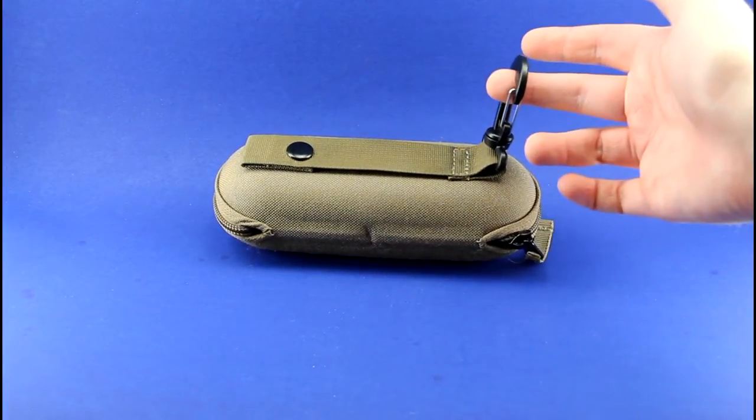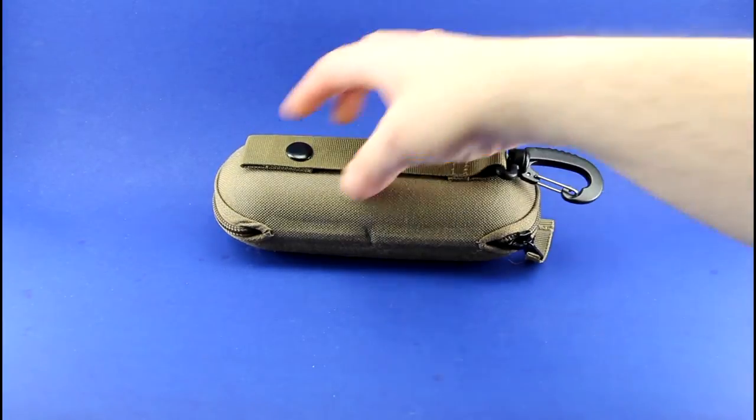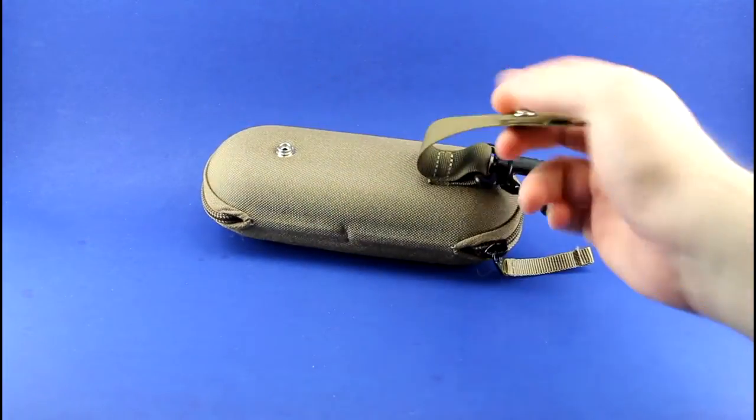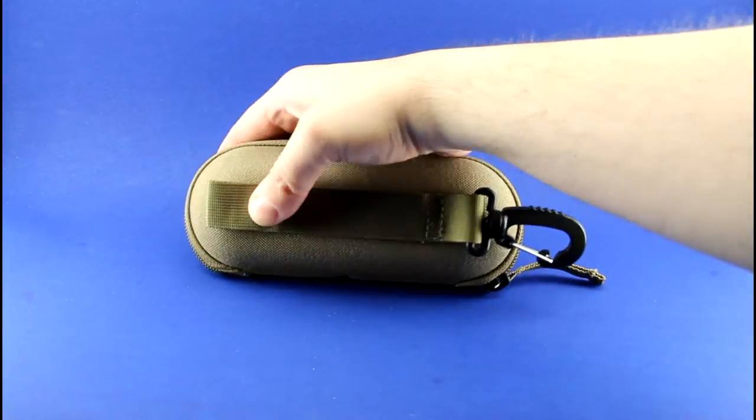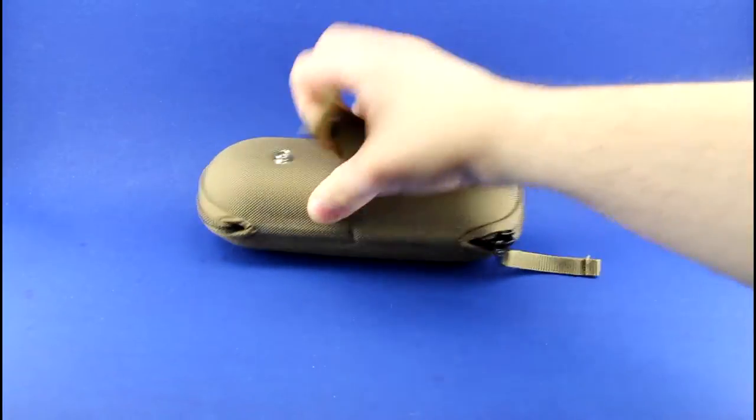The carabiner-style hook, I have to say, works a lot better than the MOLLE attachment strap. The MOLLE attachment strap is held on by a single snap, and the snap just comes off way too easily.